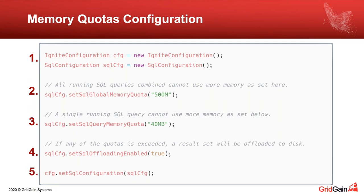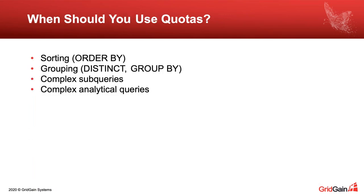Specific use cases where you should use memory quotas: when you sort data — Ignite needs the whole result set in memory — use the offload-to-disk feature. Also when you group data, execute SQL queries with subqueries, or especially run complex analytical queries — those typically deal with pretty large datasets, putting high pressure on Java heap. Use memory quotas in those scenarios.